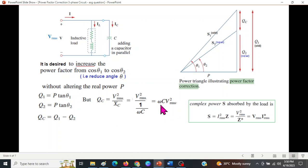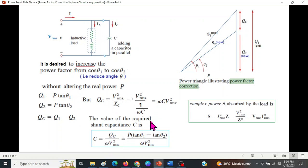Whereas Xc is actually 1 over ωC, and so the whole thing will become ωC Vrms². So we use this to find Qc. From here, C will be Qc over ω Vrms², and Qc from here is Q₁ minus Q₂, which can be written as P tan θ₁ minus tan θ₂. But this is the formula we need to solve actually.